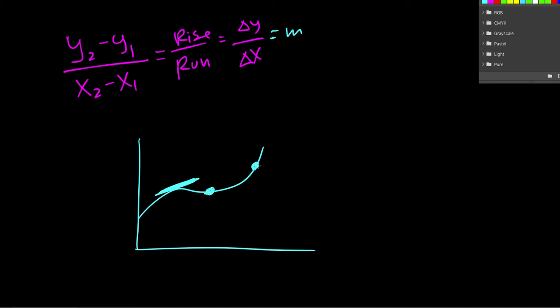So for average rate of change, we'd look at these two points. We'd call this x1, y1. We'd call this x2, y2. And then we'd plug it into this formula, find the slope between those two points, and that would be our average rate of change.